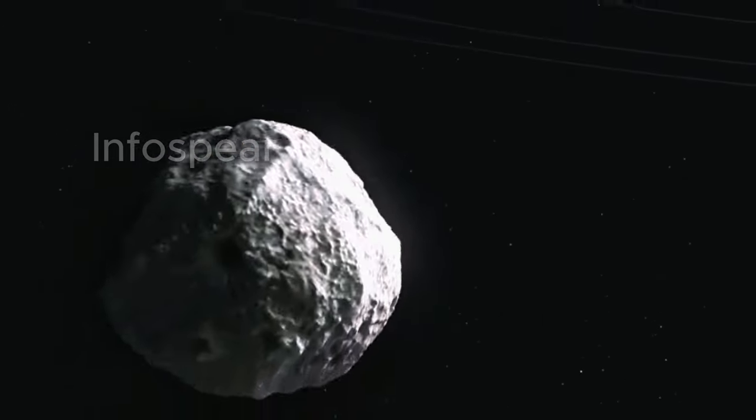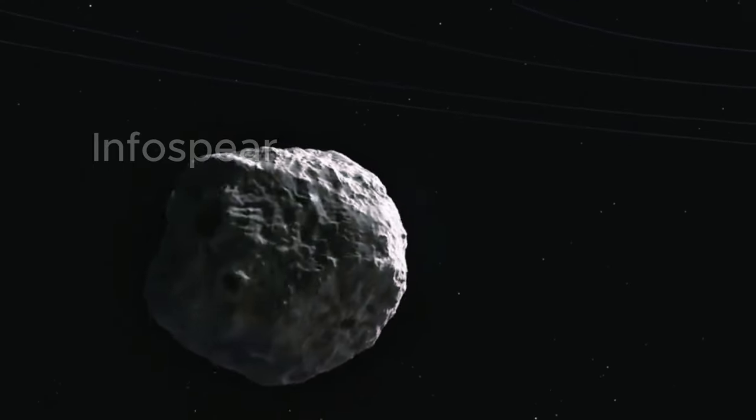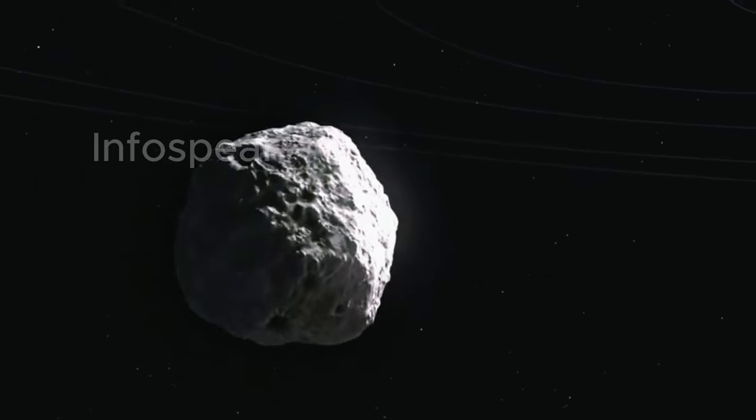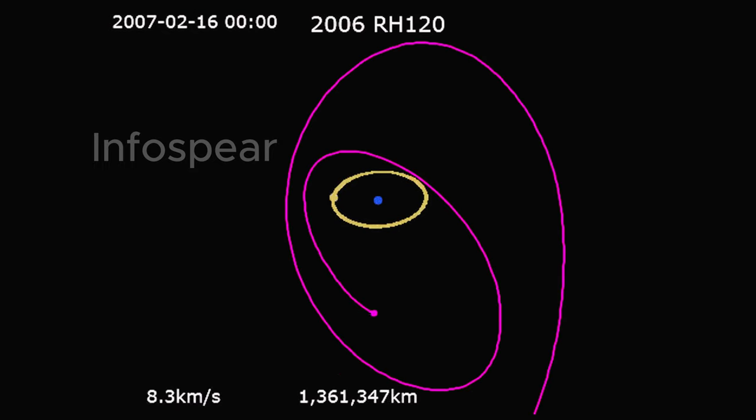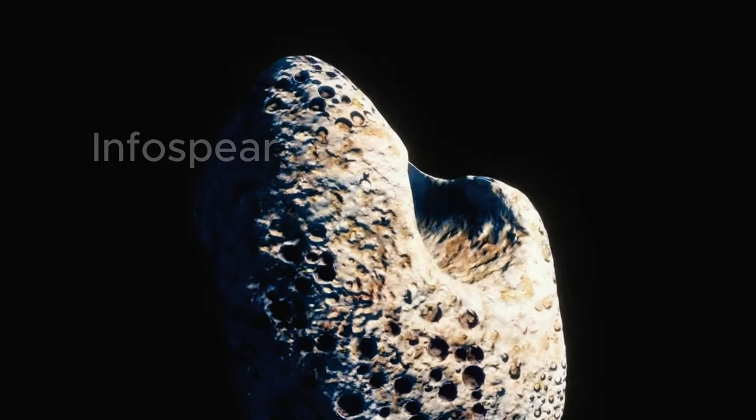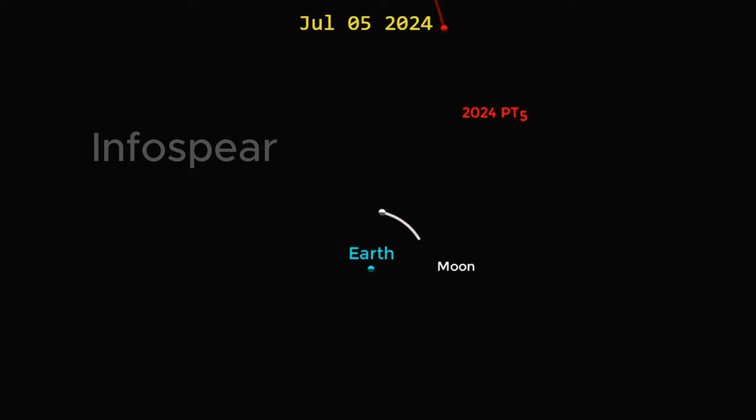Fun fact, this isn't Earth's first mini moon rodeo. Back in 2006, we had a little visitor named 2006 RH120 that stuck around for an entire year, giving scientists an incredible opportunity to study near-Earth objects up close. And now, PT5 is stepping into the spotlight, adding a fresh chapter to our cosmic adventure. These mini-moons may come and go, but each one offers a rare glimpse into the mysteries of space, helping us learn more about our own corner of the universe.